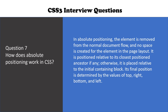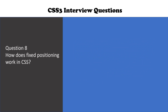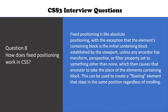The next question is: how does fixed positioning work in CSS? Fixed positioning is like absolute positioning with the exception that the element's containing block is the initial containing block established by the viewport, unless any ancestor has a transform, perspective, or filter property set to something other than none, which then causes that ancestor to take the place of the element's containing block. This can be used to create floating elements that stay in the same position regardless of scrolling.